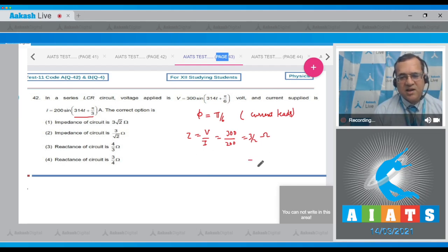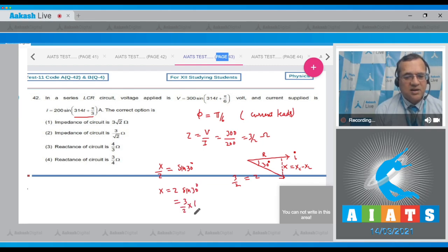Z is 3/2 ohms and the current is leading. Taking the current in one direction, voltage or Z is at 3/2 ohms. The angle is π/6 which equals 30 degrees. From geometry, X/Z = sin(30°), so X = Z × sin(30°) = (3/2) × (1/2) = 3/4 ohms. Looking at option 4, the reactance is 3/4 ohms.